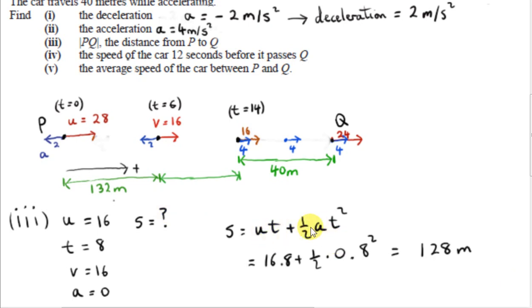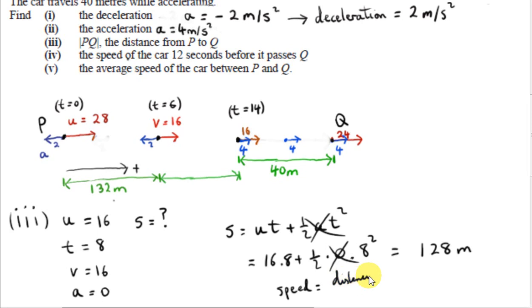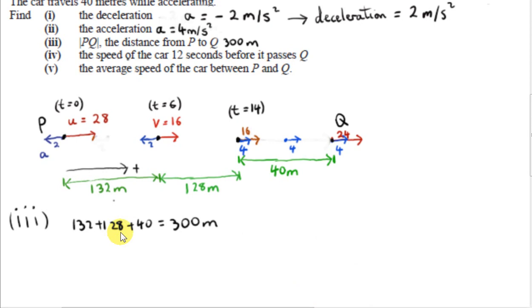Instead, we use S equals UT plus half AT squared. Since A is 0, this part of the formula effectively disappears. So we just have distance equals constant speed times time taken — a variation of speed equals distance over time. The speed is a constant 16, so we multiply 16 by 8 seconds. The formula is very simple when A is 0. Now we add up the distances traveled for the three legs of the journey to get the total distance PQ.